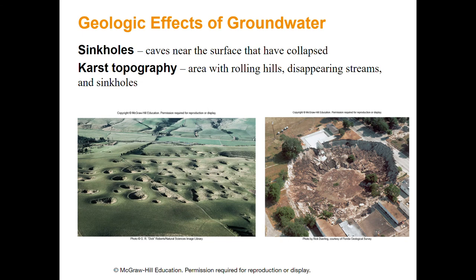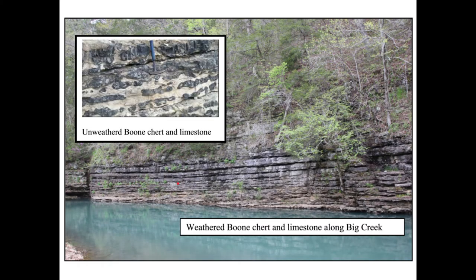Where you have areas with a lot of limestone - like here in Northwest Arkansas - you can get what's called karst topography, characterized by rolling hills, disappearing streams, and sinkholes. Our topography around here isn't super karsty, but there's definitely a lot of limestone involved. When you get karst topography you can get sinkholes and deal with groundwater issues like what we deal with around here.